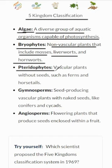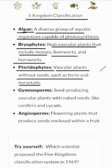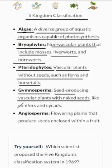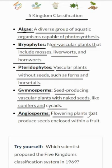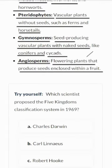Pteridophytes, unlike bryophytes, are vascular plants without seeds, such as ferns and horsetails. They've been around for millions of years, giving a glimpse into our planet's ancient past. Gymnosperms are like nature's treasure chests — seed-producing vascular plants with naked seeds, such as conifers and cycads, providing us with valuable resources like wood and paper. Angiosperms, the crown jewels of the plant kingdom, are flowering plants that produce seeds enclosed within a fruit, making up most of the plants we see in everyday life, from roses to rice.